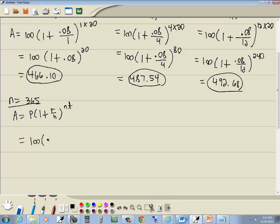P was 100. 1 plus R, which is 8%, so 0.08, divided by n, which is 365, raised to the nt power, which is 365 times 20.